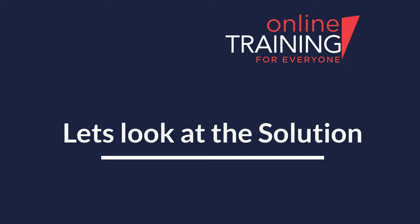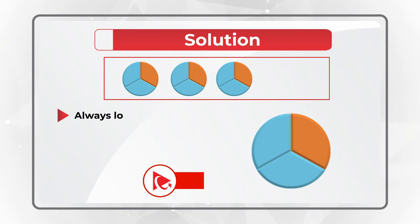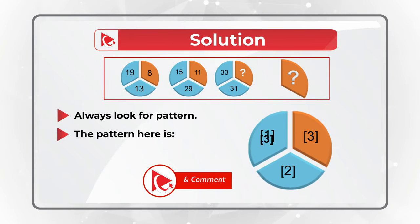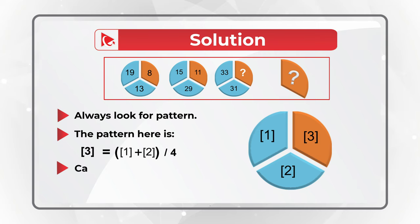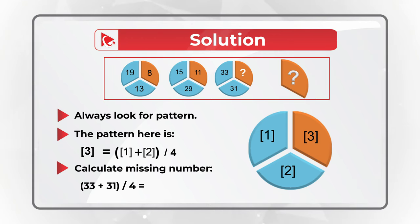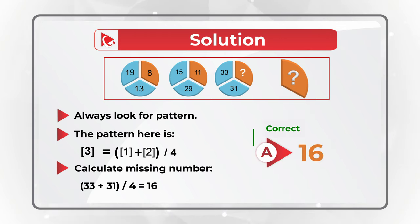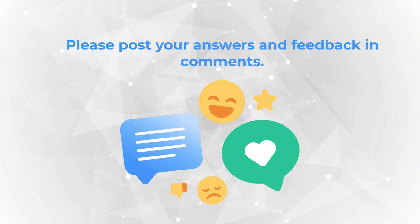You need to always look for patterns to solve these types of problems. The pattern here is that section 3 of the circle is calculated as sections 1 plus 2 divided by 4. To find the missing number, add 33 plus 31 and divide the sum by 4, and you get 16. The correct answer is choice A: 16.